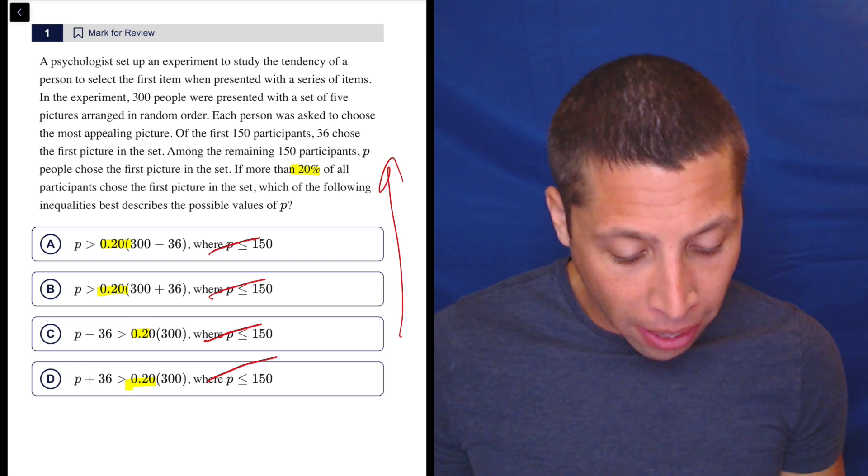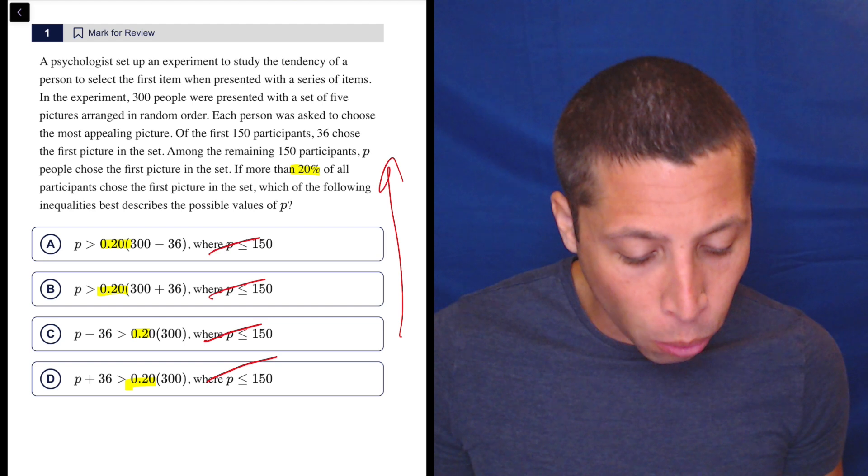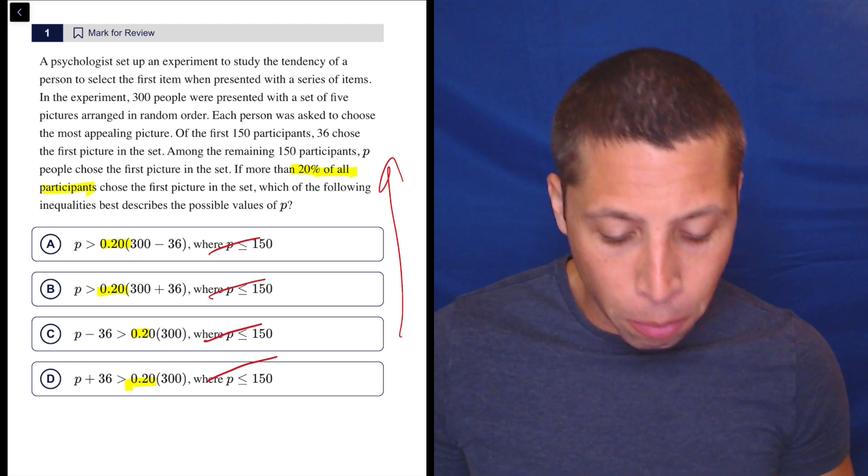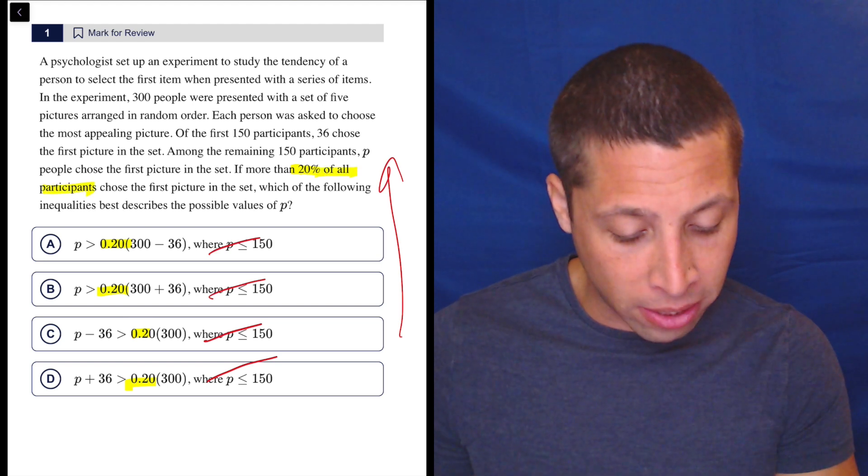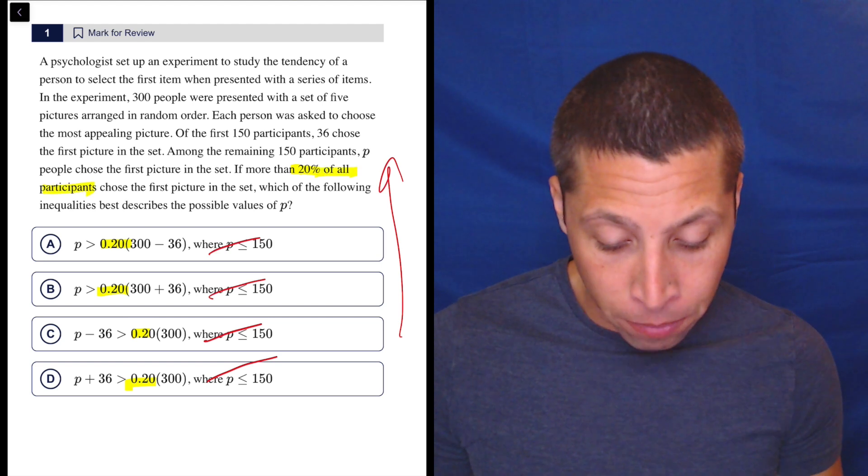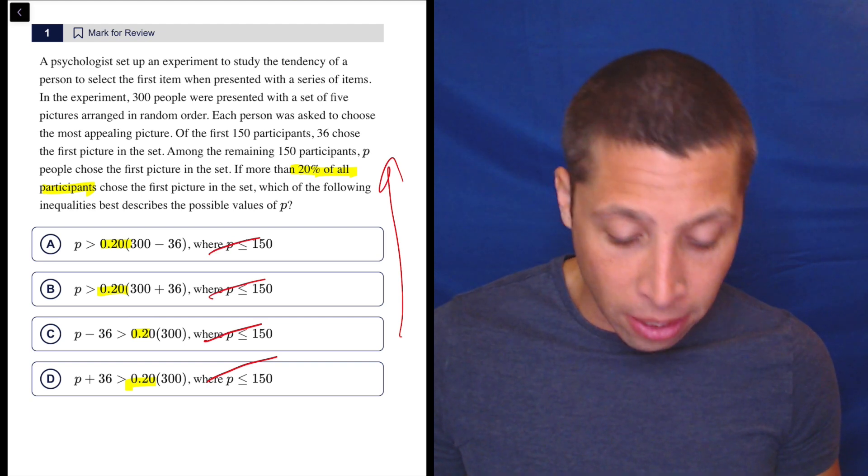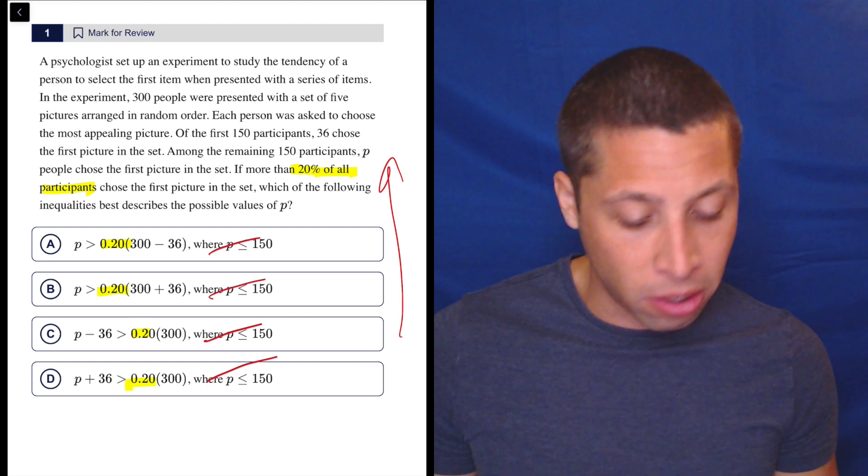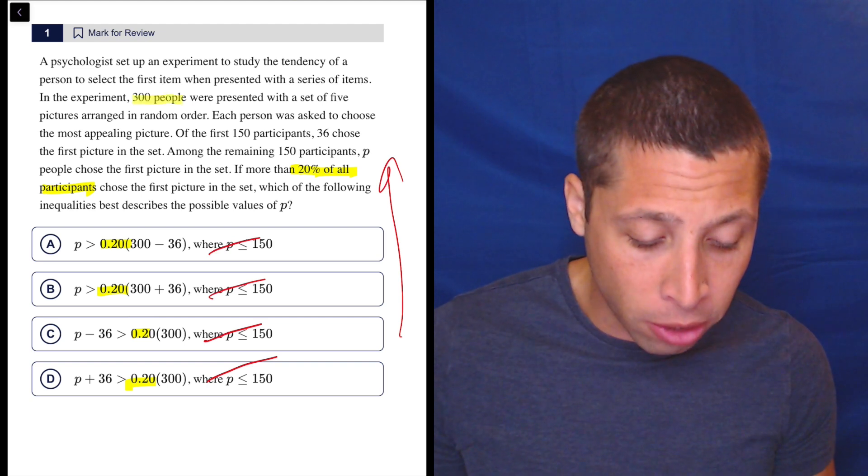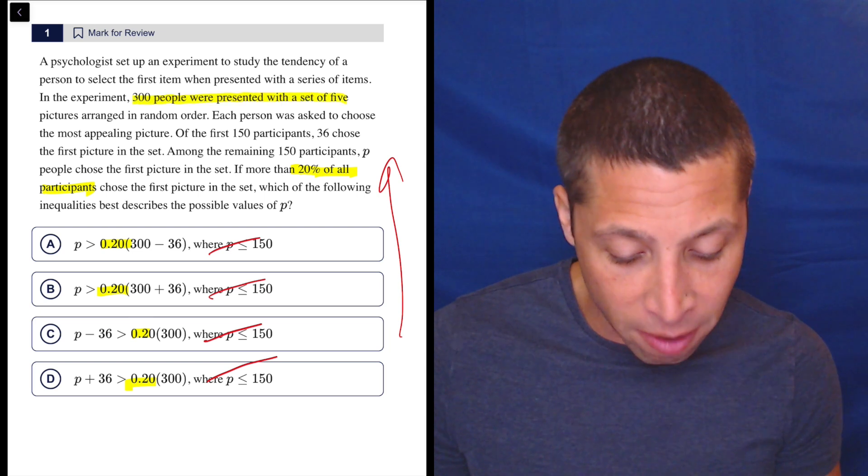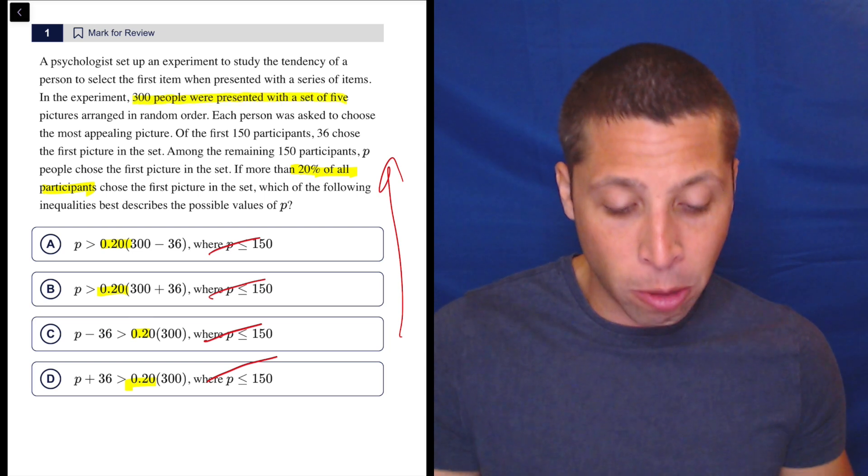So when I go to the story, I'm kind of looking for that now. So if more than 20% of all participants chose the first picture in the set, how many participants are there? A psychologist set up an experiment to study the tendency of a person to select the first item when presented with a series of items. In the experiment, 300 people were presented with a set of five pictures, right? So there are 300 people total.